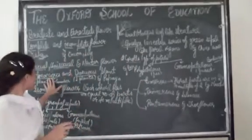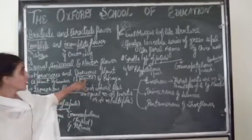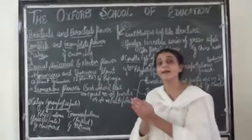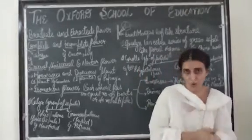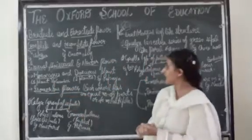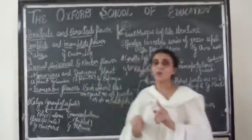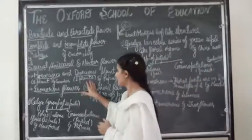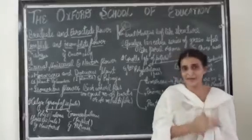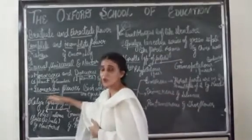The next term is monoecious and dioecious. Mono means one plant, dioecious means two plants. In the case of monoecious plants, a single plant will bear both androecium and gynoecium. A plant with the presence of both is said to be monoecious — example is cucumber. In dioecious plants, two plants are required because one plant will consist of androecium and the second plant will consist of gynoecium. One will bear male flowers and the second will bear female flowers — example is papaya.